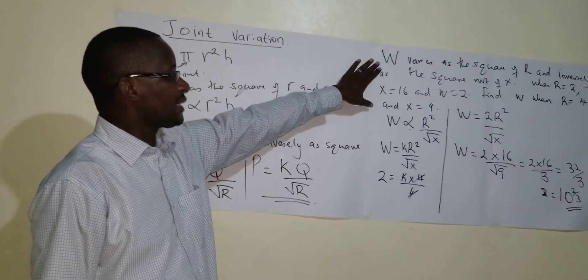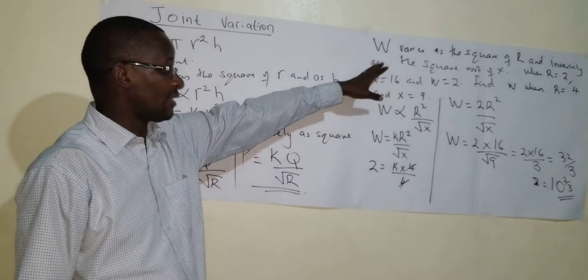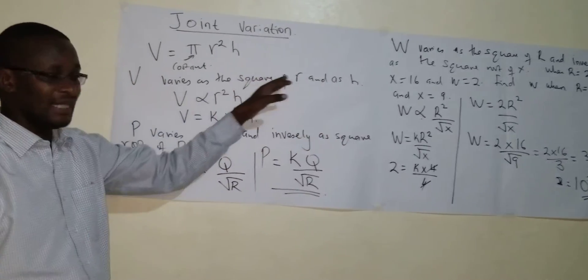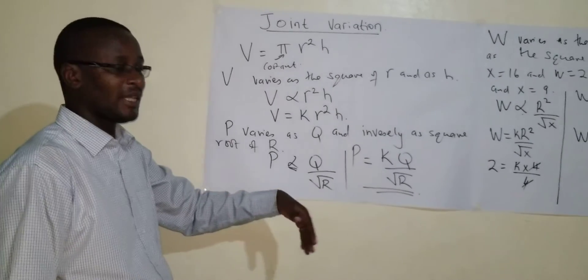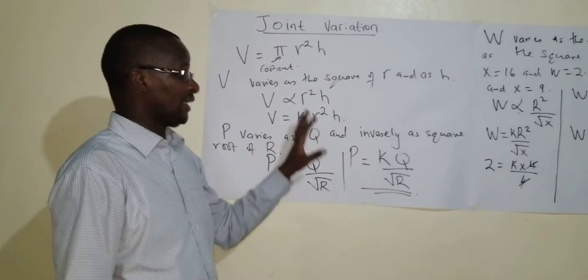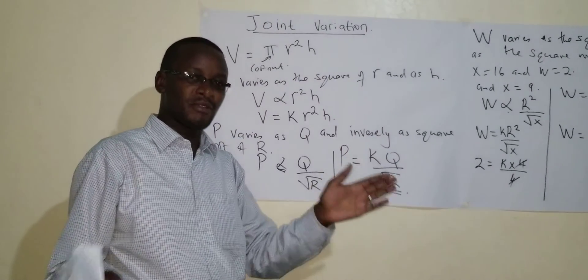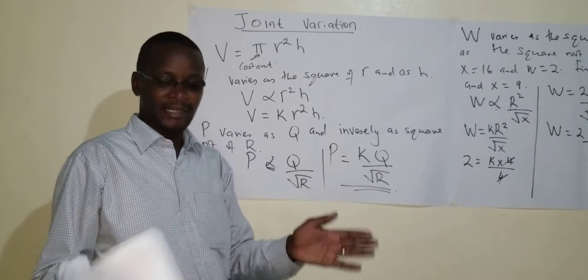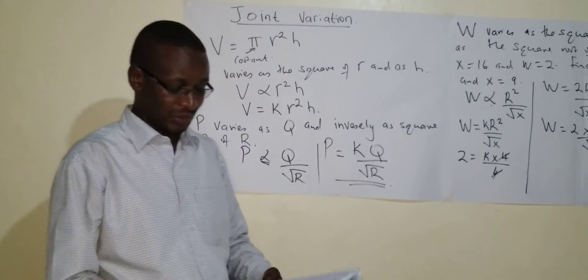You can see that we have combined both joint and inverse in this kind of a question. You can also have a question that is combining both direct and direct, and you can also have even other questions that only have inverse. So whichever question is given in joint variation, that's how you move about it. You combine both direct and inverse and then you work it out normally, just the way we were working out the other questions.